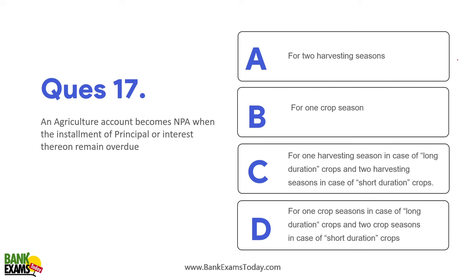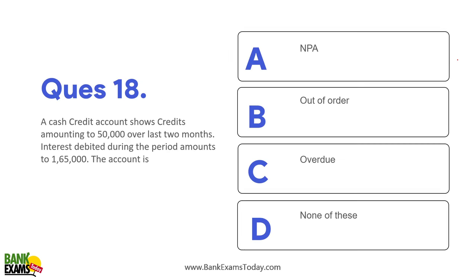An agriculture account becomes NPA if the principal or interest thereon remains overdue for one crop season for long-duration crops, and two crop seasons for short-duration crops. Example: A cash credit account shows credits of ₹50,000 over the last two months, while interest debited during the period is ₹1,65,000. Since the credit is only ₹50,000 against a required ₹1,65,000, it becomes an out-of-order account.